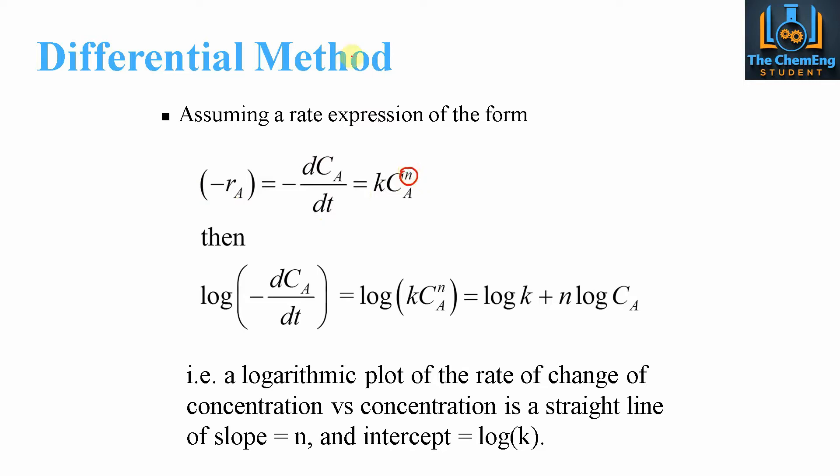If we take logs of both sides of the system, we end up with log of minus dCA over dt equals log k CA to the power N. If we break this up, we would end up with log of k plus, because of the laws of logs, this would be plus log CA to the power N. The power can come to the front, so that's where this N comes from here.